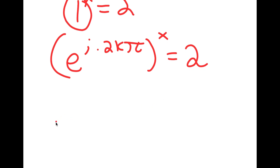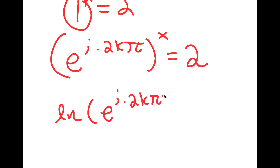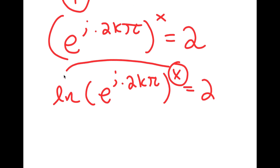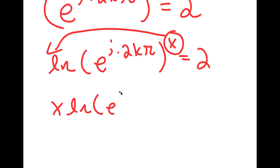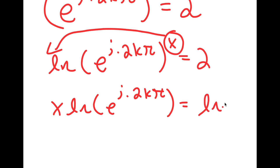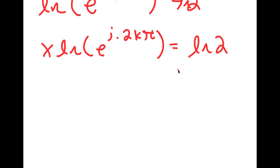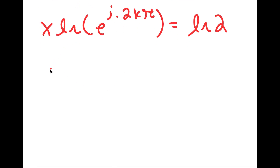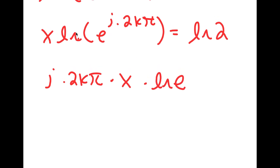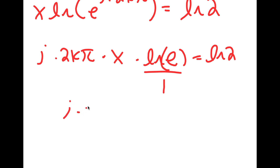Now to solve this, I'm going to take the natural log on both sides, and I can move x to the front. So I get x times ln of e to the power of i times 2k pi is equal to ln 2. This is the same as i times 2k pi times x times ln e, using the ln power property. And ln of e is equal to 1, so I'm left with i times 2k pi times x is equal to ln 2.